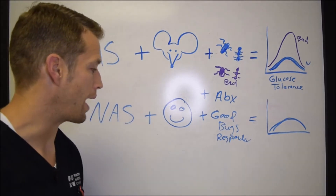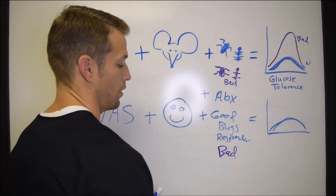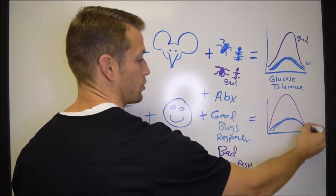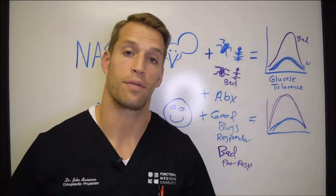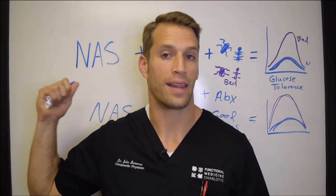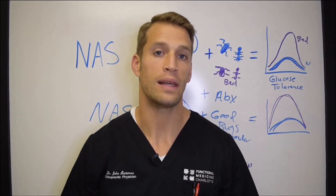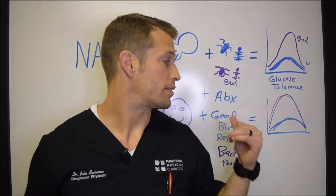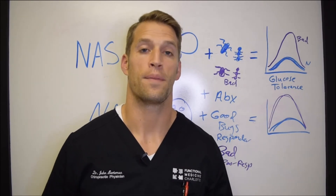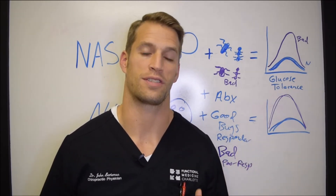But if you add the artificial sweetener to a human being that has bad bugs, or is a poor responder, then they're going to have a glucose intolerance curve, and that person is going to have obesity, insulin resistance, and type 2 diabetes promoted physiologically by the non-caloric artificial sweeteners — by the sucralose, by the Splenda, by the other brands they're consuming. Research has also shown that these artificial sweeteners increase pro-inflammatory expression inside the body, meaning pro-inflammatory pathways are driven up, leading to metabolic dysfunction and contributing to insulin resistance, diabetes, and obesity.